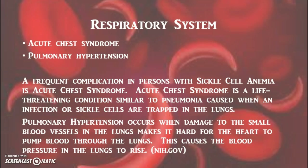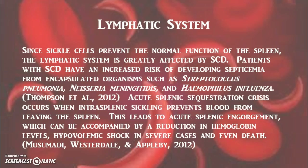Acute chest syndrome, very similar to pneumonia, and pulmonary hypertension — high blood pressure in the lungs — are complications that affect the respiratory system. The spleen, part of the lymphatic system, is often greatly affected by sickle cell anemia. Some patients with severe complications as a result have their spleens removed.